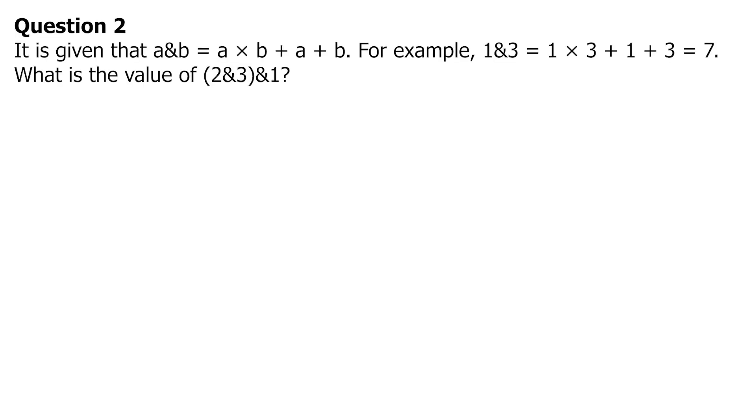Question 2: It is given that A and B equals A times B plus A plus B. For example, 1 and 3 equals 1 times 3 plus 1 plus 3 equals 7. What is the value of 2 and 3 and 1?